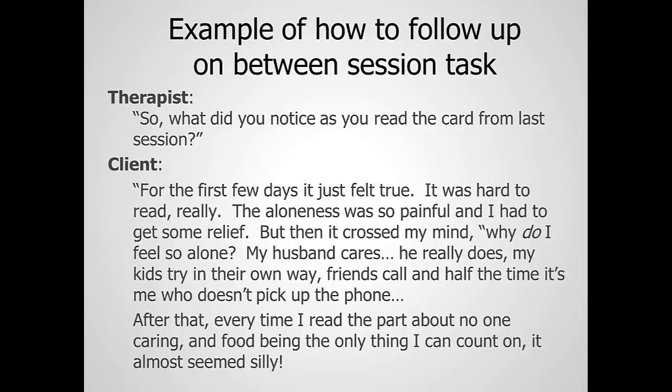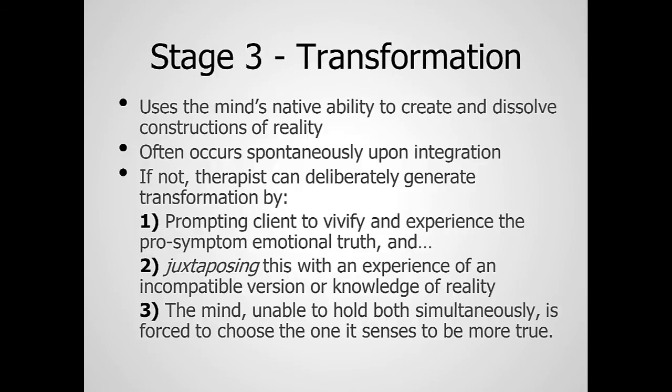This is an example — and this happens the vast majority of the time — where transformation occurs spontaneously as a result of fully integrating the pro-symptom position. Just the very act of staying with it and having it fully integrated makes what we call a juxtaposition experience occur spontaneously, where she suddenly becomes aware of something incompatible: the first information being 'I've got no one,' and the second being 'I'm surrounded by people that love me and I'm not letting them in.' The two can't stay in the same field of awareness at the same time. The mind can't tolerate that and has to make a choice. This is stage three: transformation.